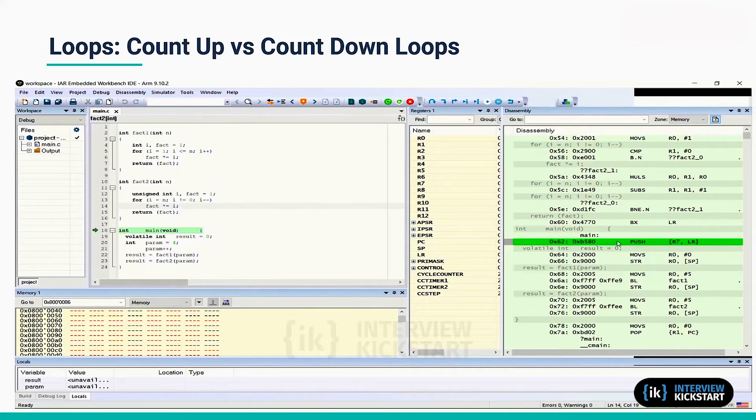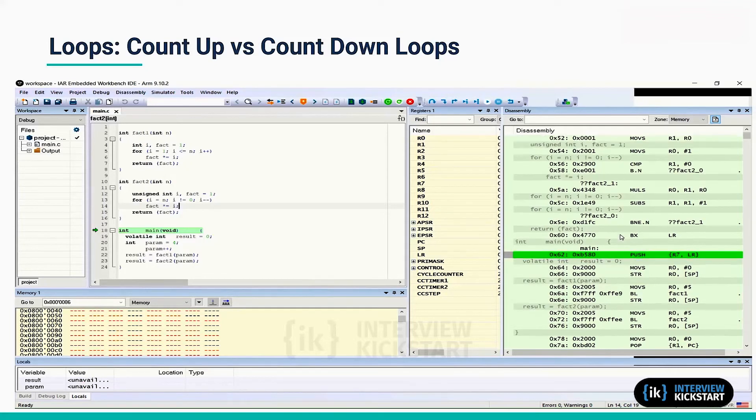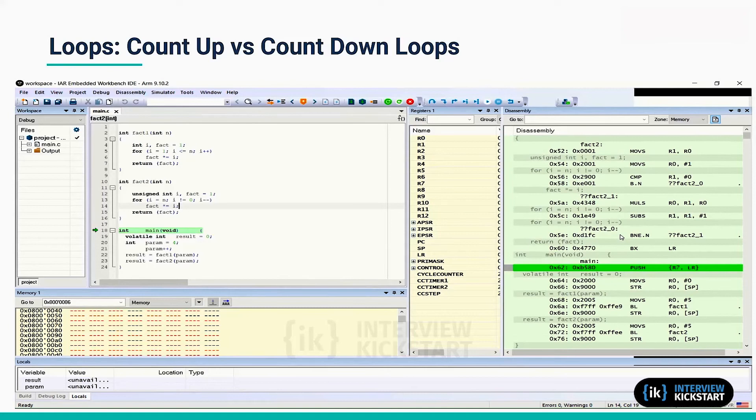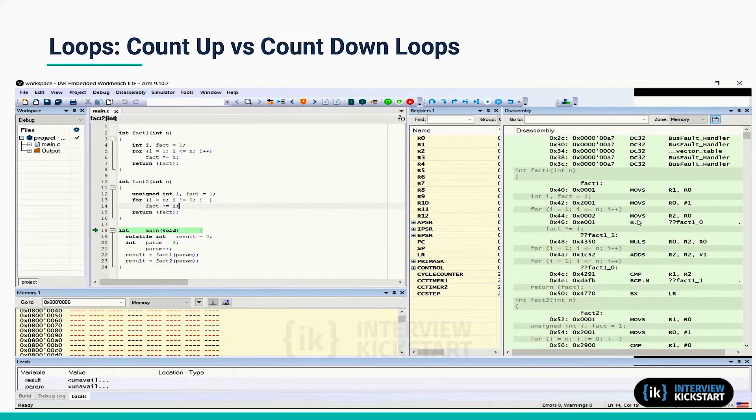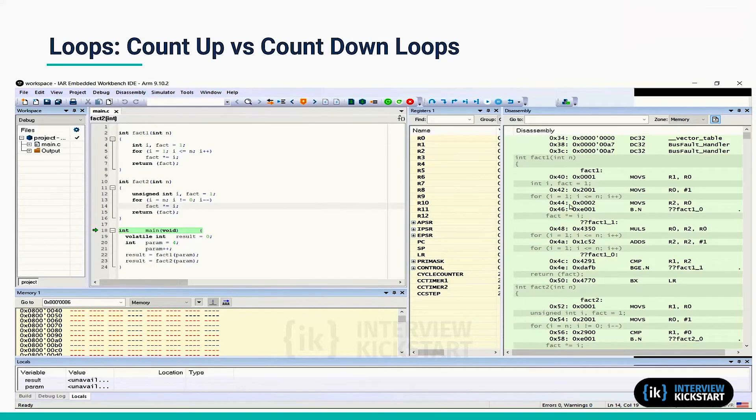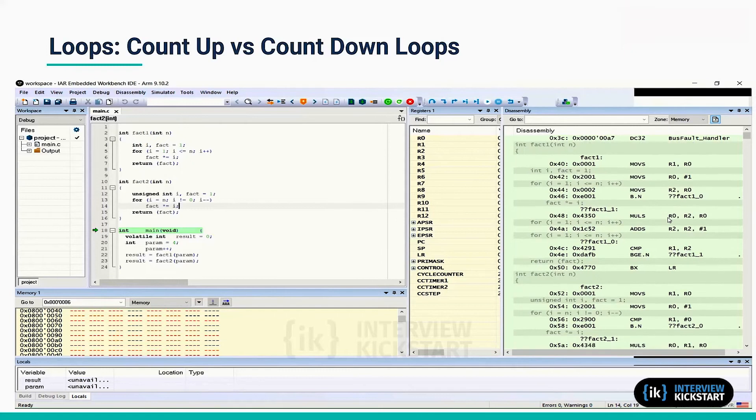Let's look at the disassembly code generated by the compiler with medium optimization set. So here is at the top the function fact1, the code that implements this function. So there are initial initializations and then here is the actual multiplication inside the loop followed by incrementing of the index.